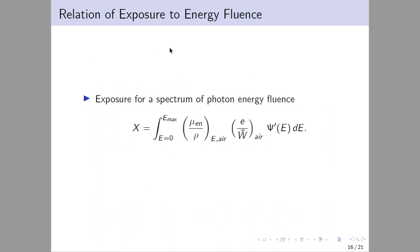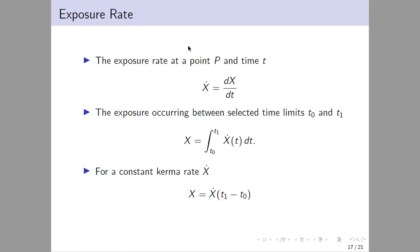The relation of exposure to energy fluence is the integral from E=0 to E_max of Ψ_dot times E times dA, giving us the exposure for a given energy spectrum. The exposure rate at point P at time T equals Ẋ = dX/dt, and the total exposure between times T0 and T1 is the integral of Ẋ(t)dt.